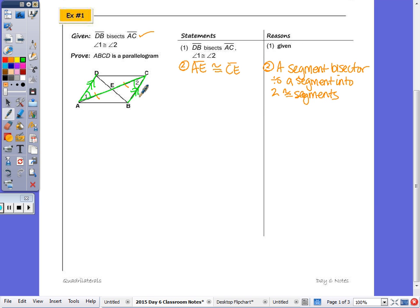Because if two lines cut by a transversal form congruent alternate interior angles, then they're parallel. So number three is AD is parallel to CB or BC.